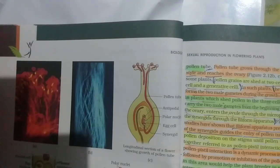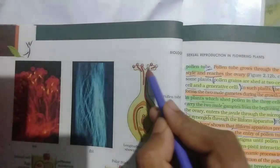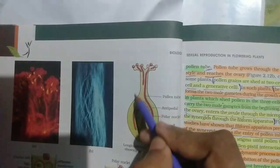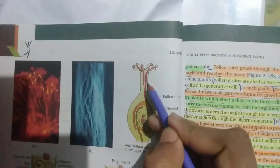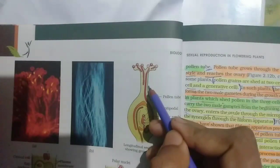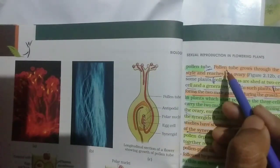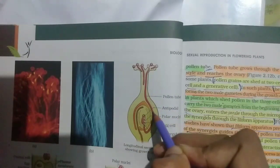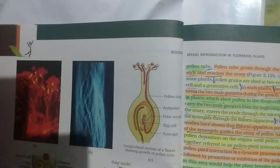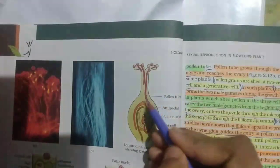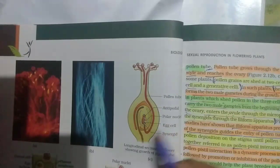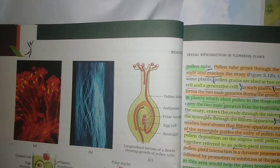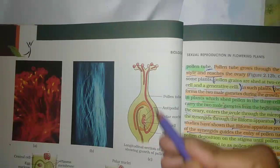The pollen tube grows through the tissue of stigma and style. From this tissue, the pollen tube is produced and grows into the ovary.